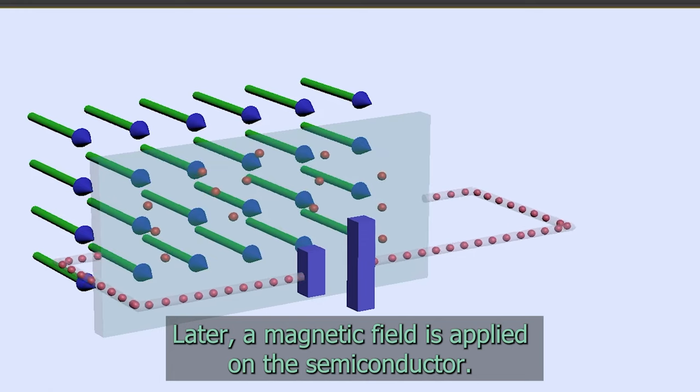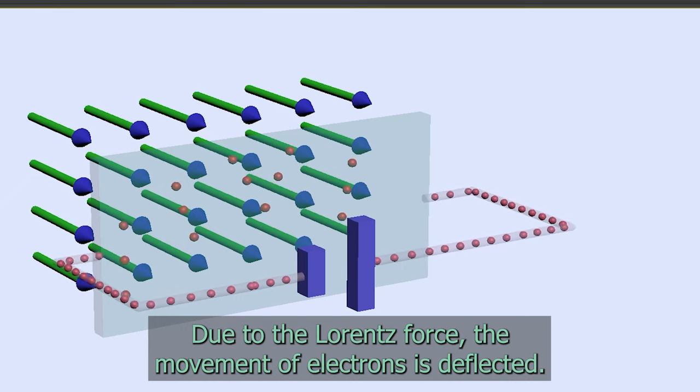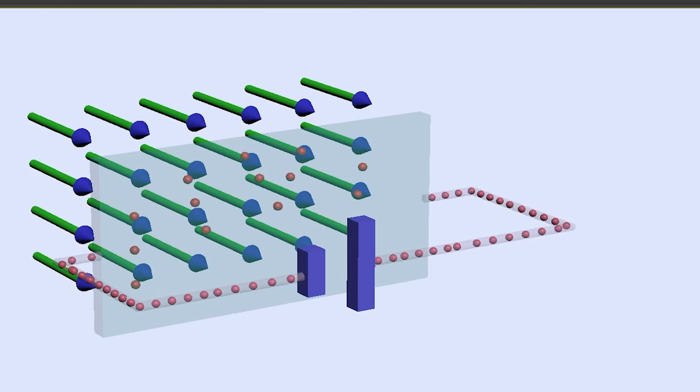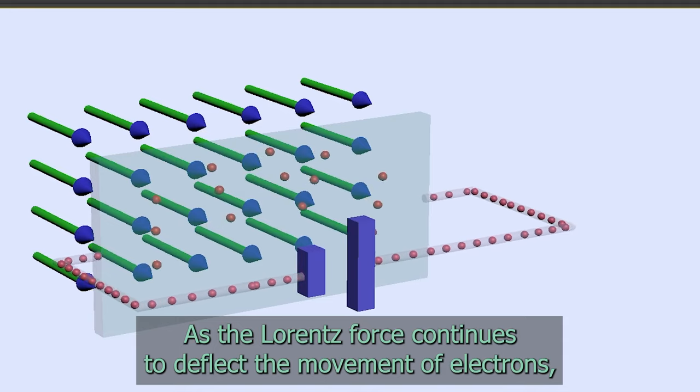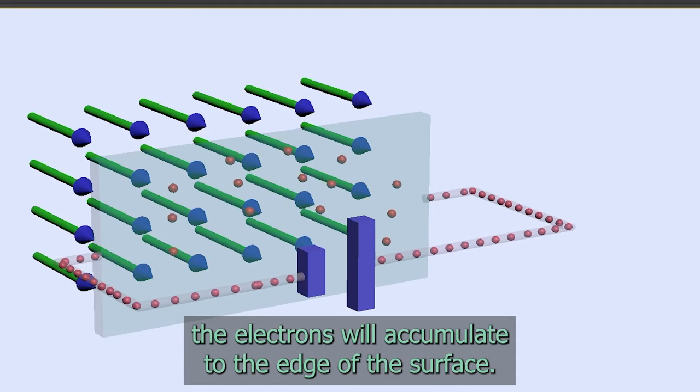Later, a magnetic field is applied on the semiconductor. Due to the Lorentz force, the movement of electrons is deflected. As the Lorentz force continues to deflect the movement of electrons, the electrons will accumulate to the edge of the surface.